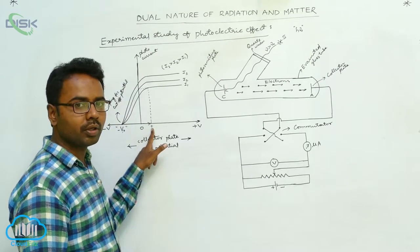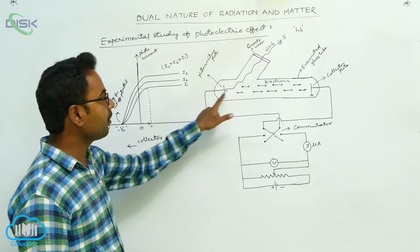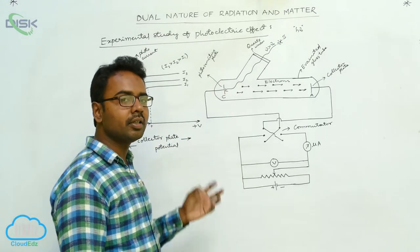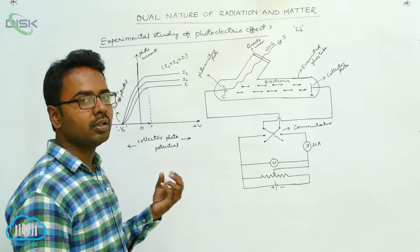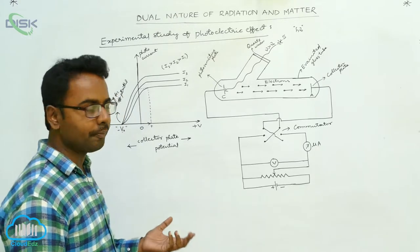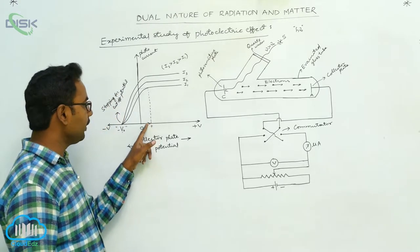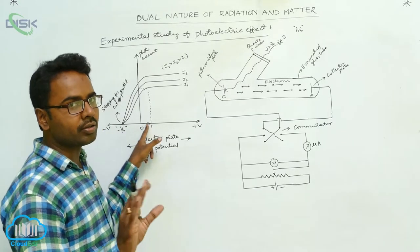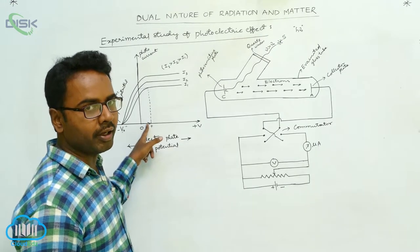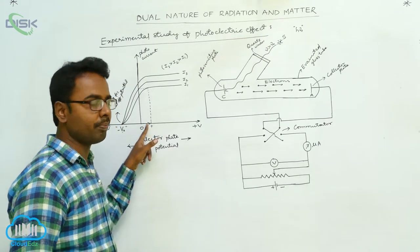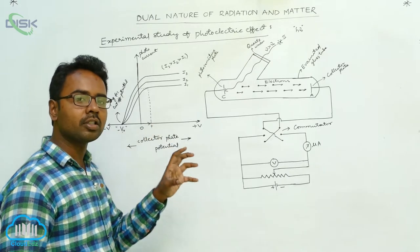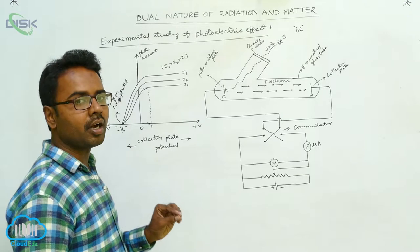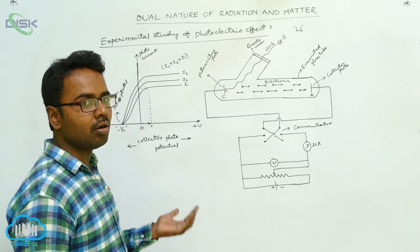At this particular positive voltage, all the electrons emitted from the emitter plate are received by the collector plate. That is the reason why the current becomes maximum — that is, the saturation current. When the potential is below this particular positive voltage, not all electrons are received by the collector plate. At this particular positive voltage only, all electrons emitted from the emitter plate are collected, so current becomes maximum — that is called saturation current.